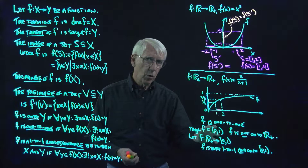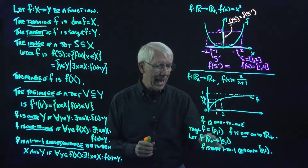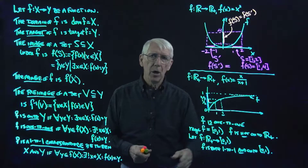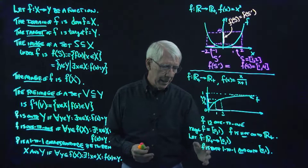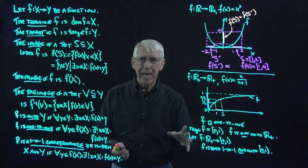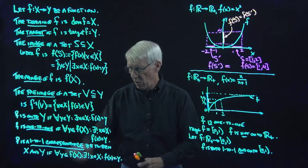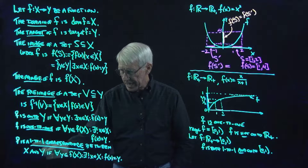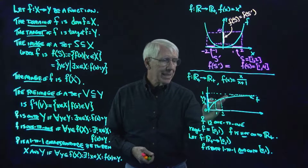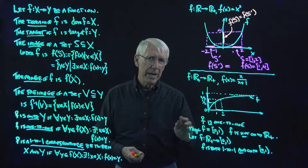Now we have f is both 1-to-1 and onto the target space. So it's a 1-to-1 correspondence — a 1-to-1 correspondence between the non-negative real numbers and the interval from 0 to 1, including 0 but not 1. The fact that it's a 1-to-1 correspondence means that, to a certain degree, the sets are like the same set. We say the sets X and Y can be placed in 1-to-1 correspondence with one another.